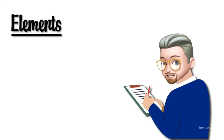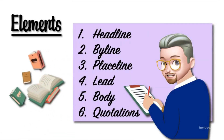Now let's look at the elements of a newspaper article. Number one, the headline. Number two, the byline. Number three, the place line. Number four, the lead. Number five, the body. And number six, quotations.